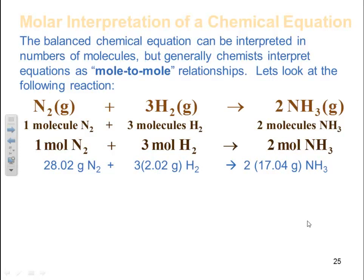One mole of H2 is 2.02, and I got three of them. And it's 17.04 grams of ammonia, and I got two of those. To do the math, it gives me 28.02 plus 6.06, which is 34.08 grams for ammonia.